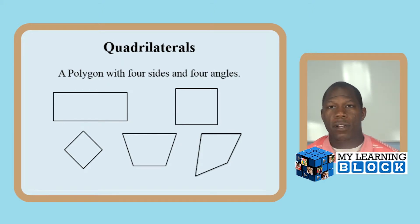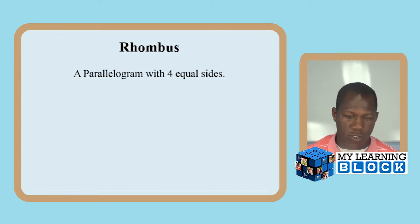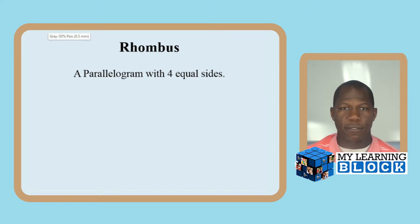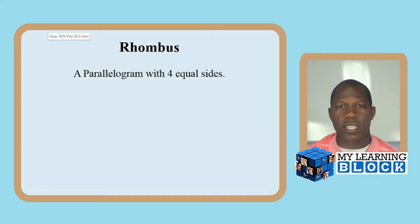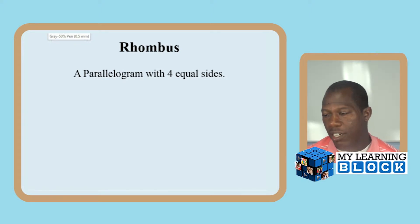Rhombus — I like rhombuses. They lead to different shapes such as kites, diamonds, and different things of that nature. But rhombus is one of the primary quadrilaterals that we need to be able to identify.